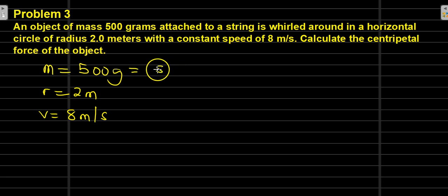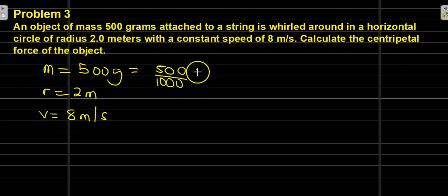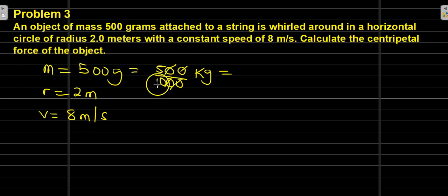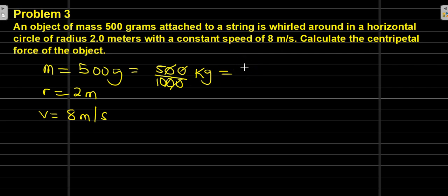The conversion is: 500 grams divided by 1000, which equals 0.5 kilograms.